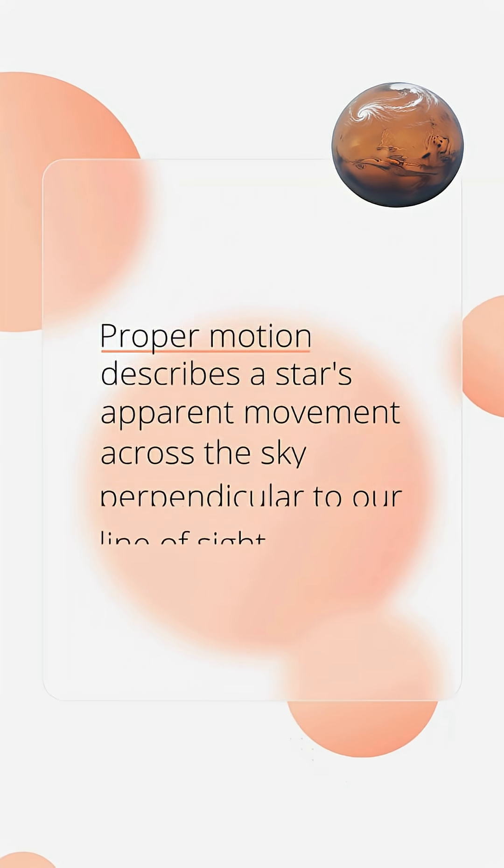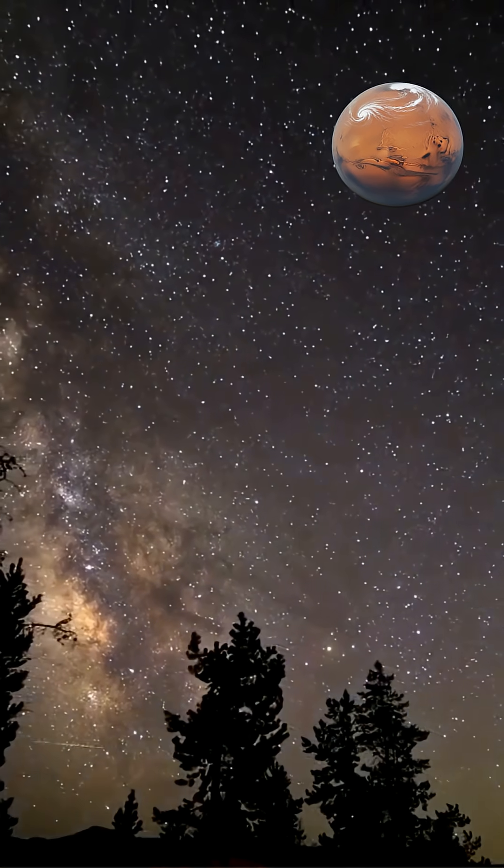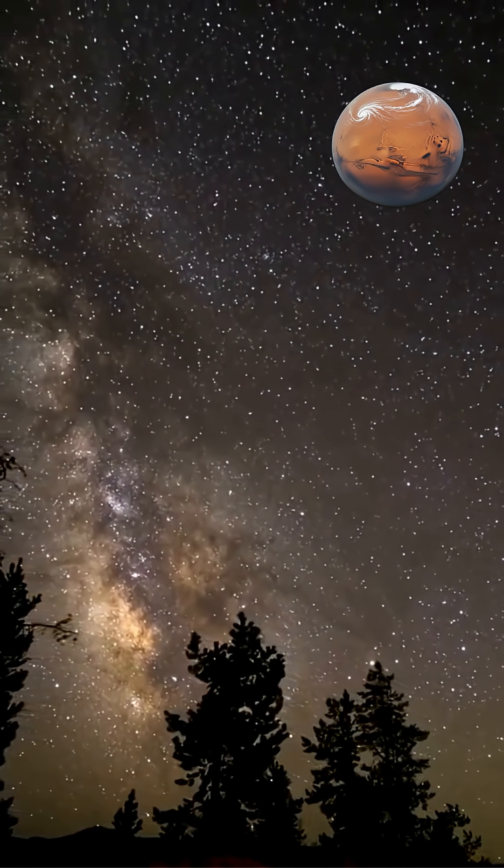Proper motion describes a star's apparent movement across the sky perpendicular to our line of sight. The fastest moving star visible to the naked eye is Barnard's star.